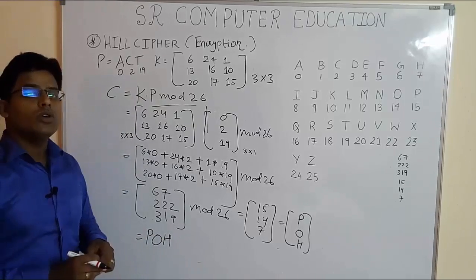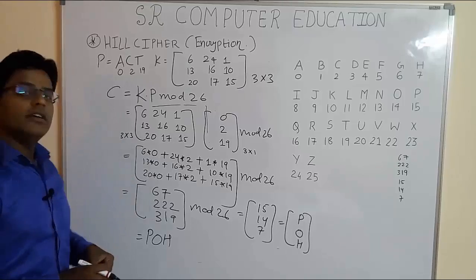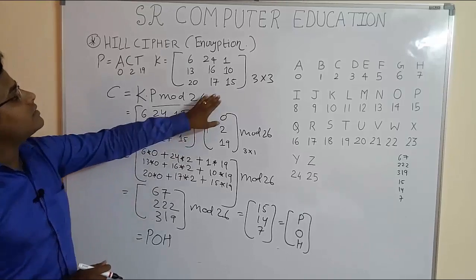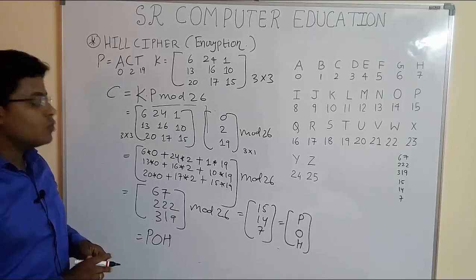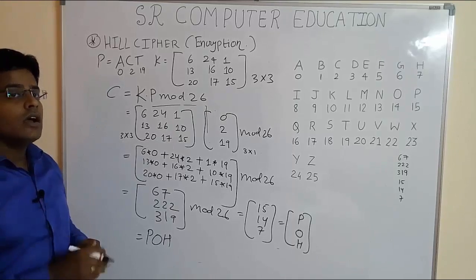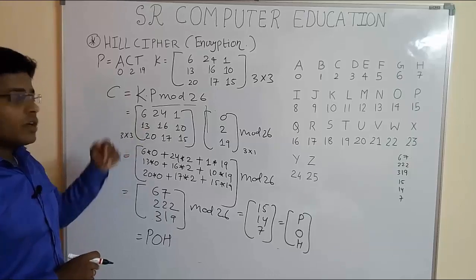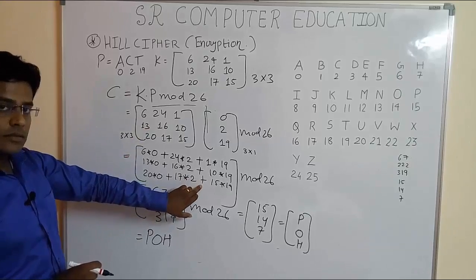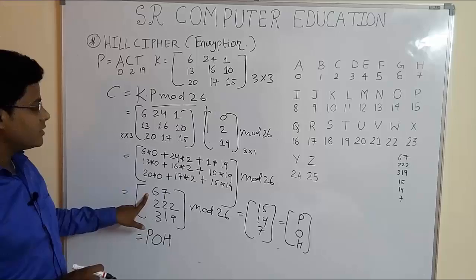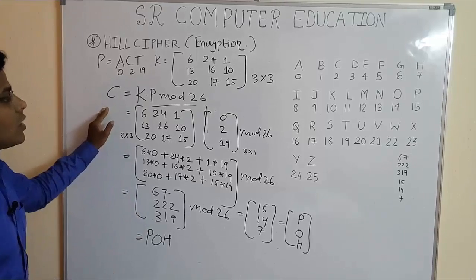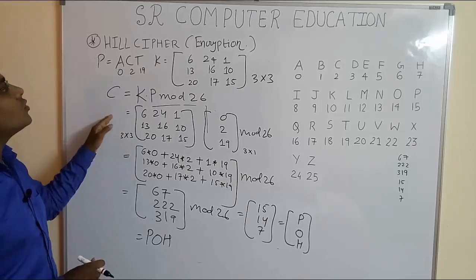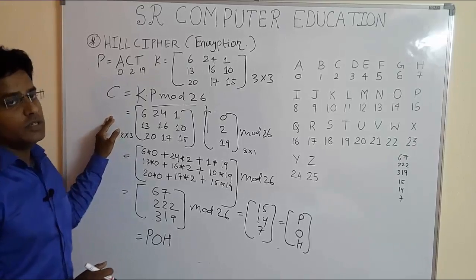This is how you do encryption when the key matrix is 3×3. Students mostly make mistakes at two locations: first is the matrix multiplication, and second is finding the mod operation. I hope this video has helped you. This is how you do encryption using Hill cipher.